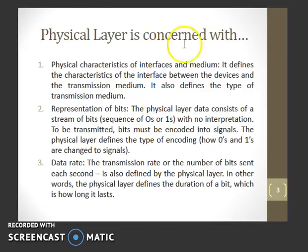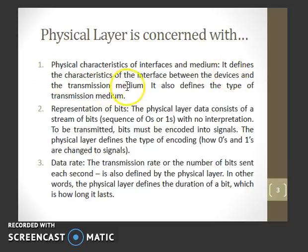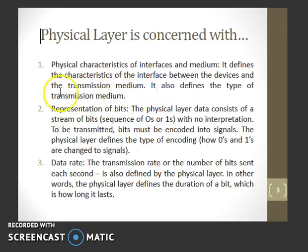The physical layer is concerned with the characteristics of interfaces and medium. It defines the characteristics of the interface between the devices and the transmission medium, and also defines the type of transmission medium.